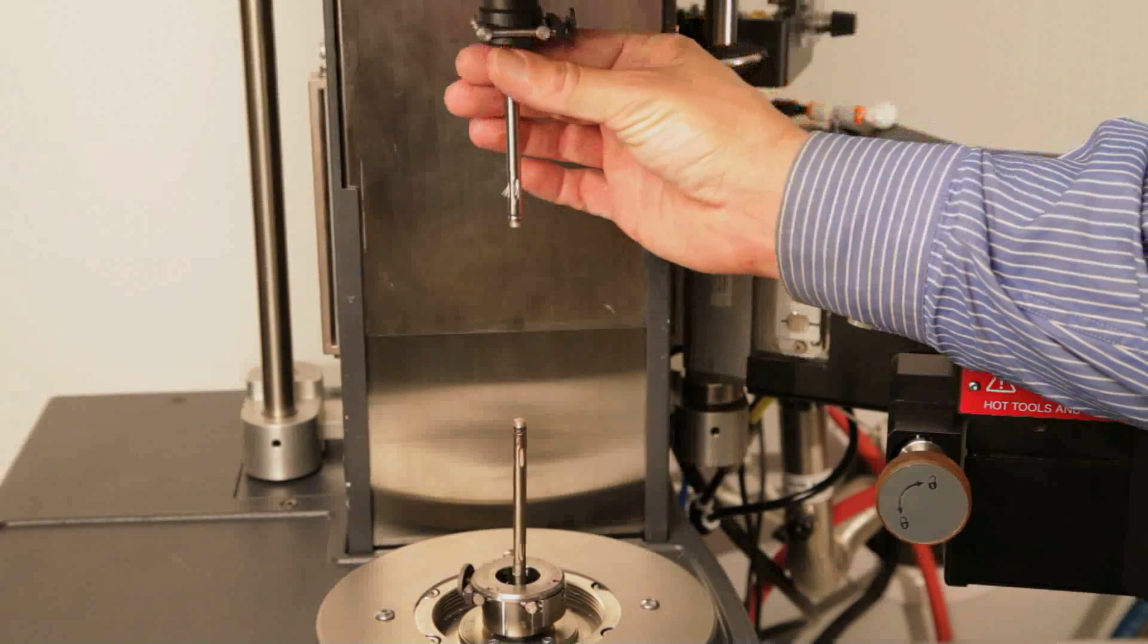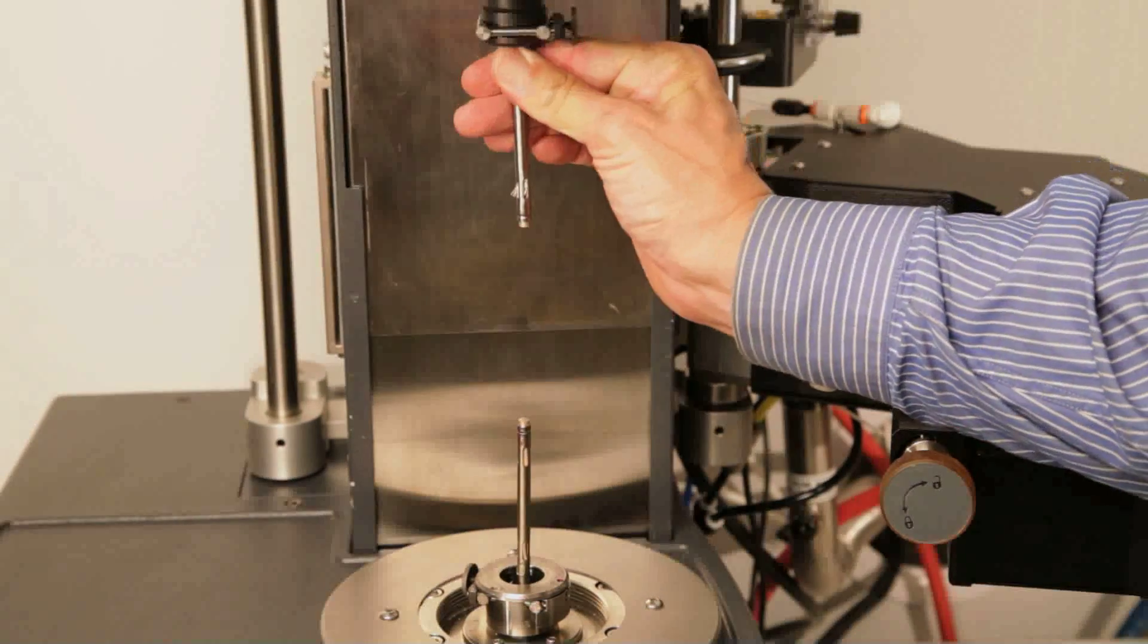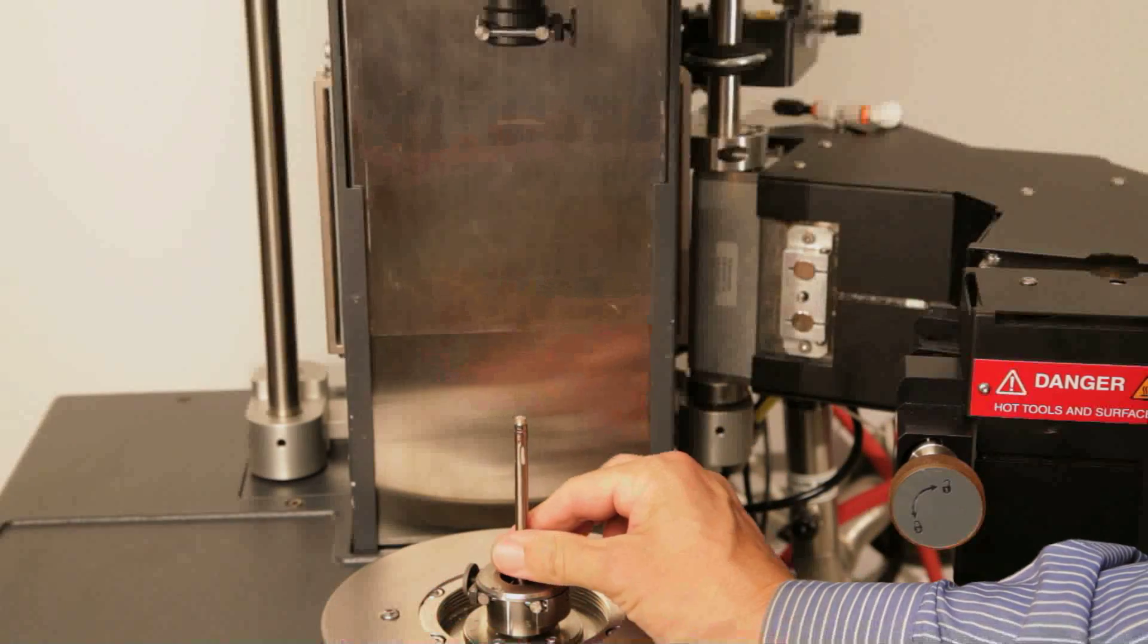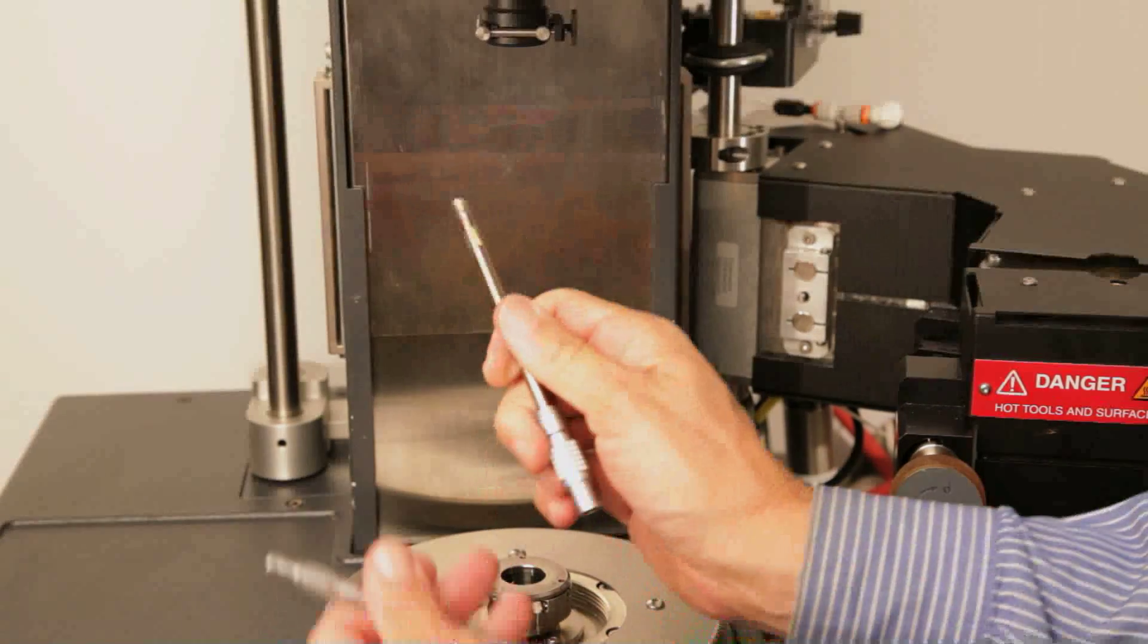If the ARIES G2 has been previously configured with upper and lower PRTs, remove them before attempting to install the torsion fixture.